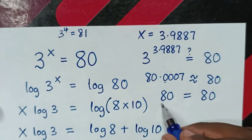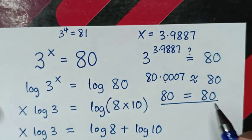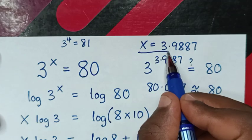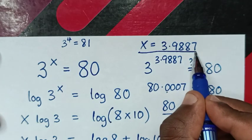Now left side and right side are equal, then it is true for the value of x is 3.9887.